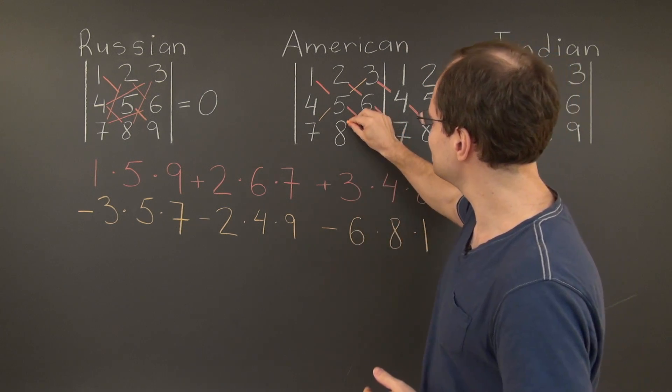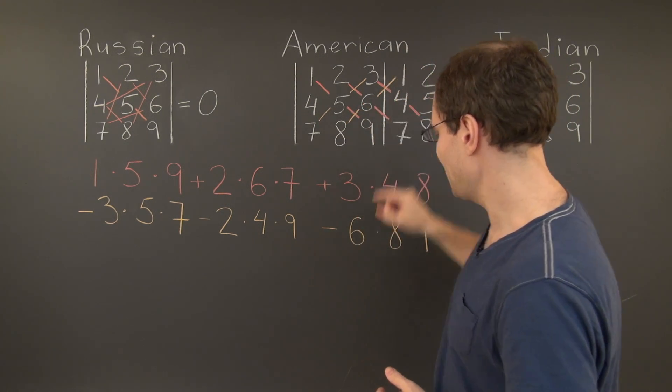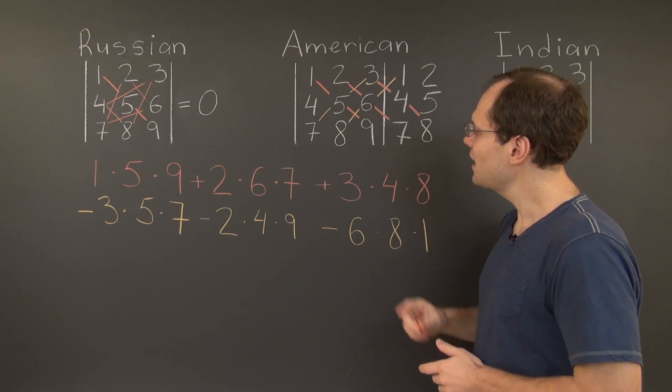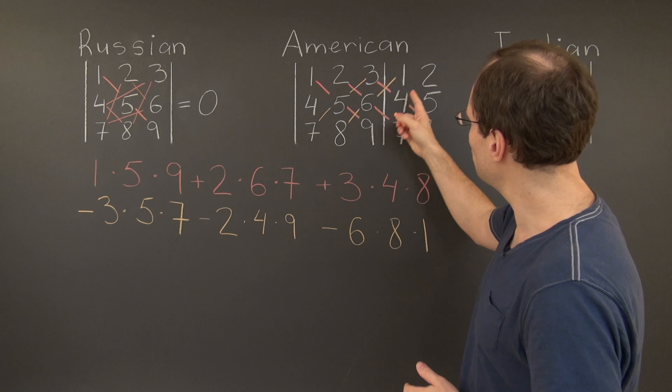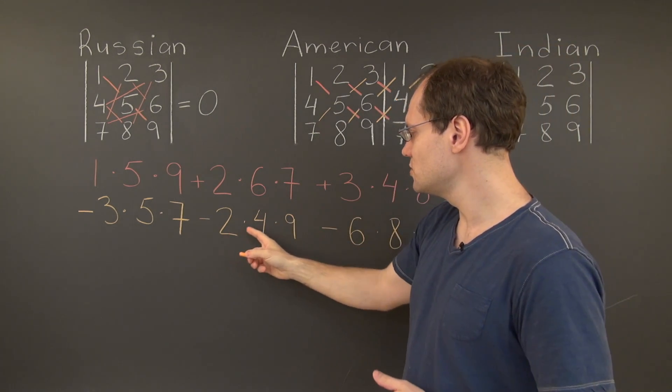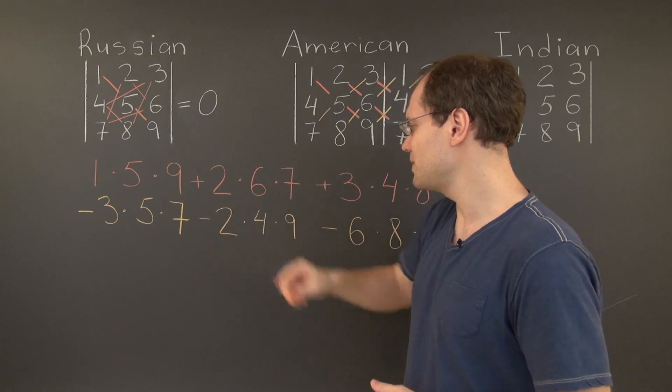The second one is 8, 6, 1. And here it is, minus 6 times 8 times 1. And finally, 9, 4, 2. And here it is, 2 times 4 times 9 with a minus sign.